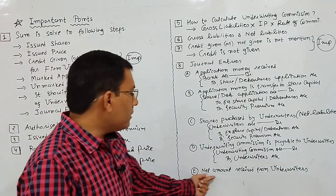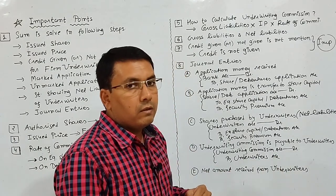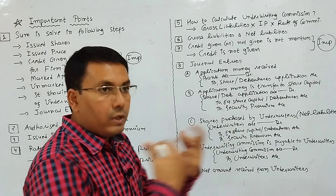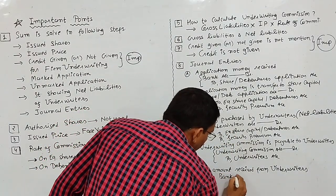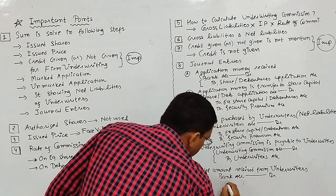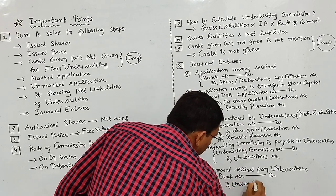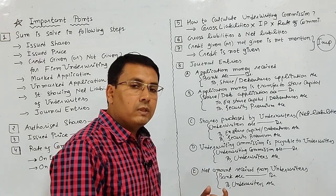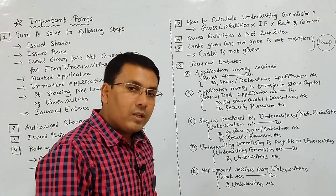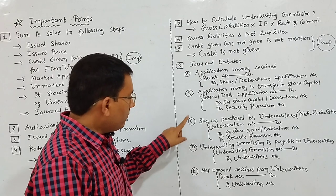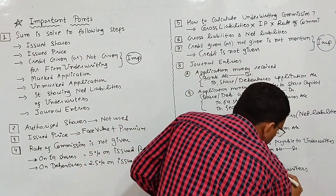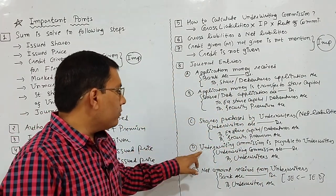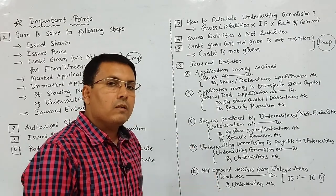Last entry E: net amount received from underwriters. When underwriters pay the net amount to the company, Bank Account Dr. to Underwriters Account. The net amount is calculated as Entry C minus Entry D — subtract the fourth entry from the third entry; whatever the difference is, that is the amount in the last entry.